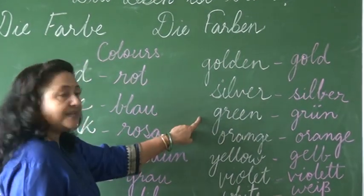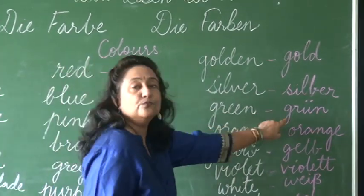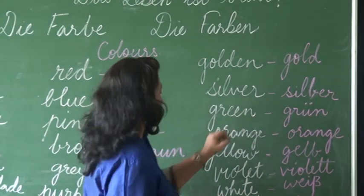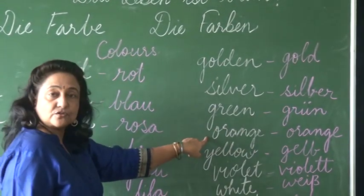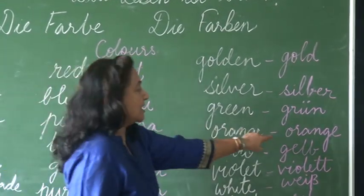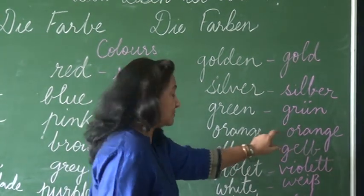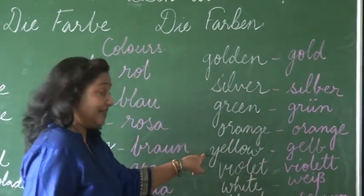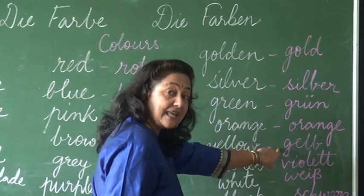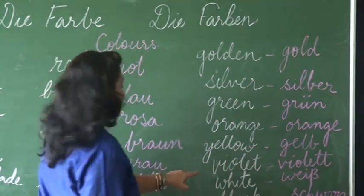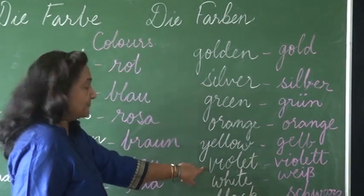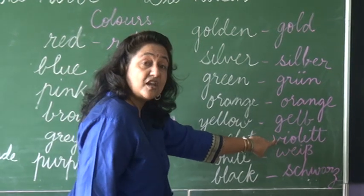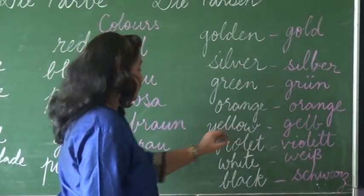Next: Green is Grün. Orange is Orange. Yellow is Gelb. Violet — mark the pronunciation — Violett.